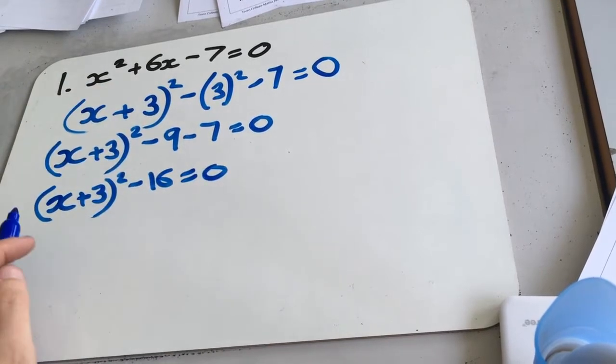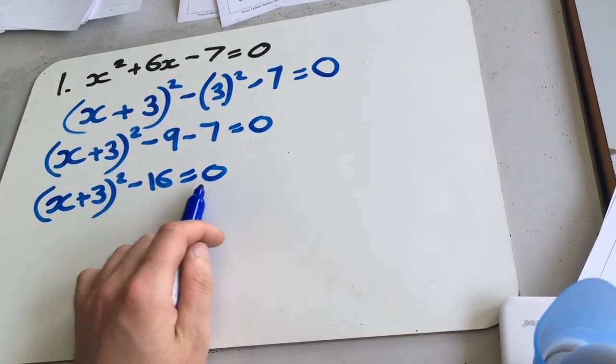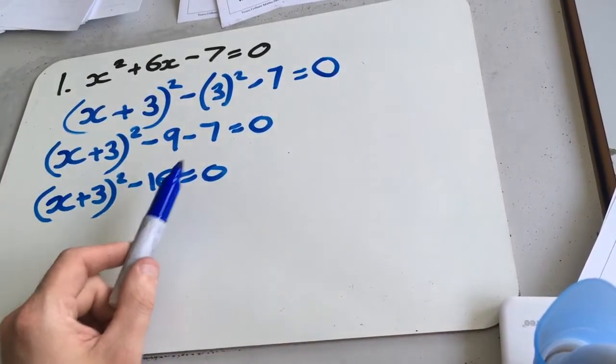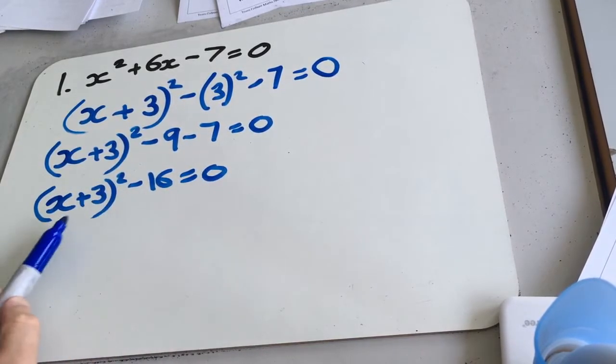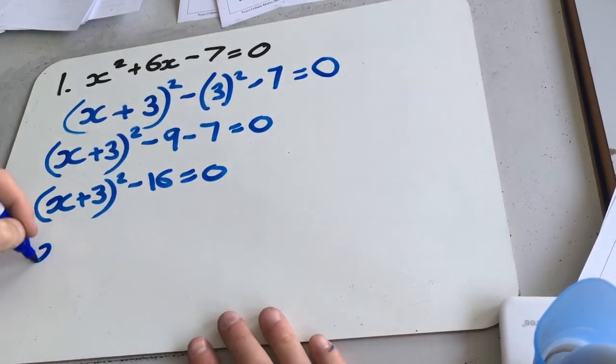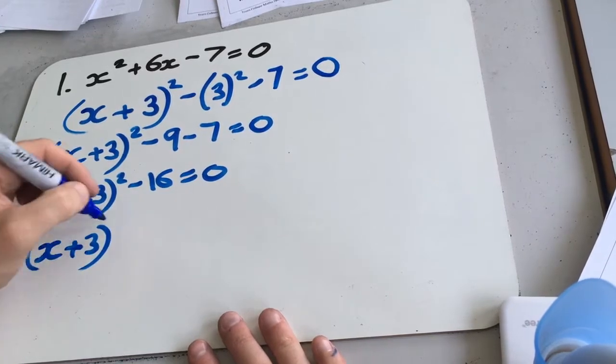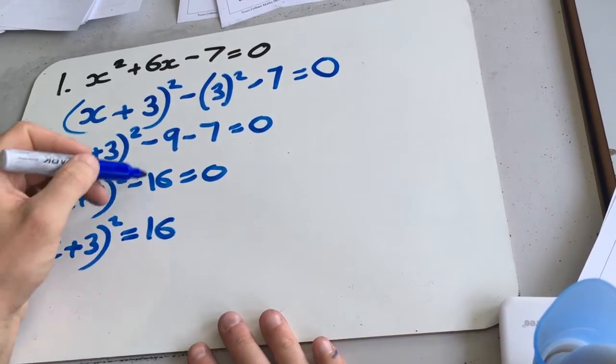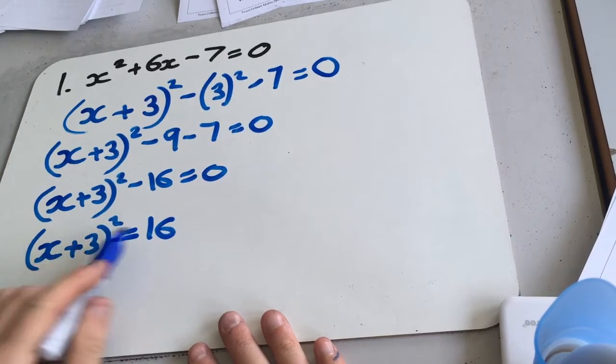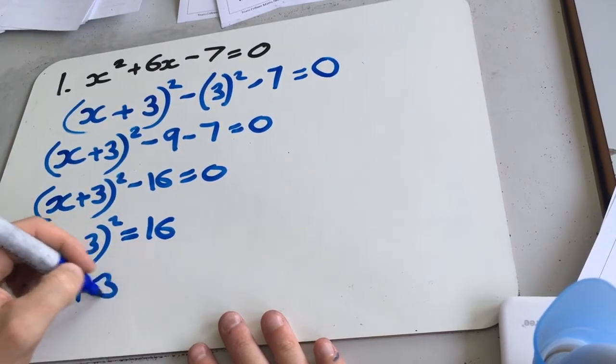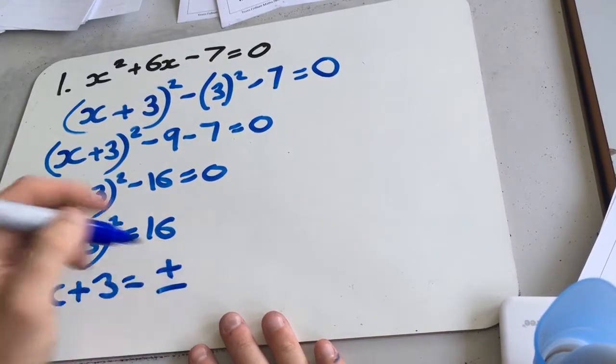And here's where it gets different. So we've finished completing the square, but now we have this equal 0. So what we're going to do is we're going to add the 16, square root, and then subtract the 3 to get an answer for our x values. So x plus 3 squared equals 16. Square root both sides, so x plus 3 is plus or minus 4.